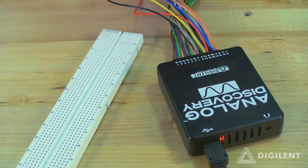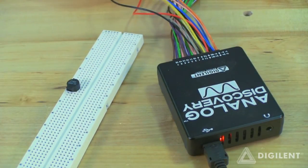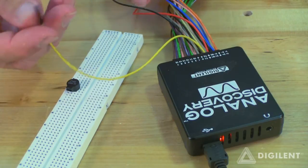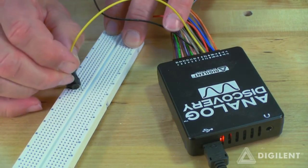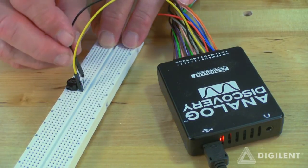Simply insert the terminals of the speaker into the holes in your breadboard. Then connect channel 1 of the AWG, the yellow wire, to one terminal of the speaker, and ground, the black wire, to the other terminal of the speaker.